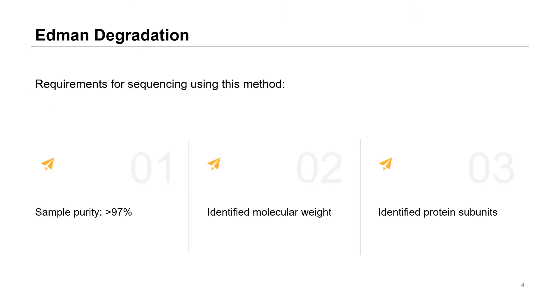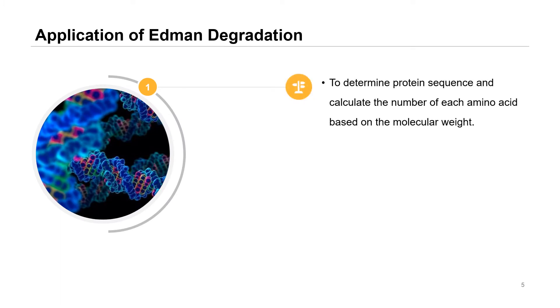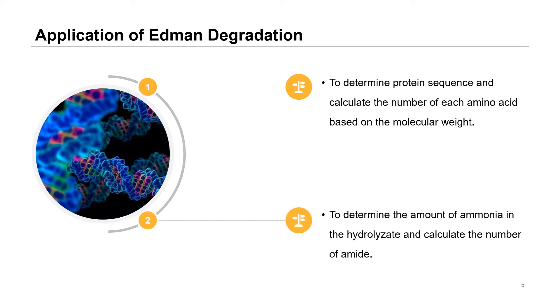First, Edman degradation, developed by Pehr Edman in the 1950s, is one of the methods for analyzing the N-terminal amino acid sequence in peptide chains or proteins. It's also called the PTC method or PTH method depending on the reagent used. When using this method, the sample must be pure — greater than 97% — and we must note the molecular weight of the protein and whether the protein consists of several subunits. We can determine the amino acid composition and calculate the number of each amino acid based on molecular weight.